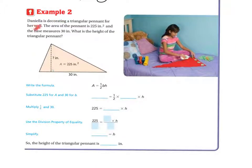All right, example 2. Daniela is decorating a triangular pennant for her wall. The area of the pennant is 225 inches squared. And the base measures 30 inches. What is the height of the triangular pennant? All right, so this is the opposite. It's kind of like we did last time. So we know the area. We know the base. We do not know the height. We do know the formula.